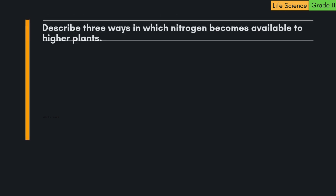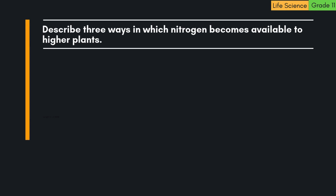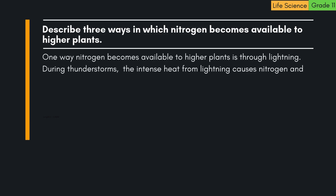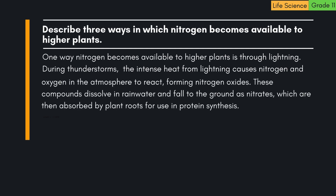Question: Describe three ways in which nitrogen becomes available to higher plants. One way nitrogen becomes available to higher plants is through lightning. During thunderstorms, the intense heat from lightning causes nitrogen and oxygen in the atmosphere to react, forming nitrogen oxides. These compounds dissolve in rainwater and fall to the ground as nitrates, which are then absorbed by plant roots for use in protein synthesis.